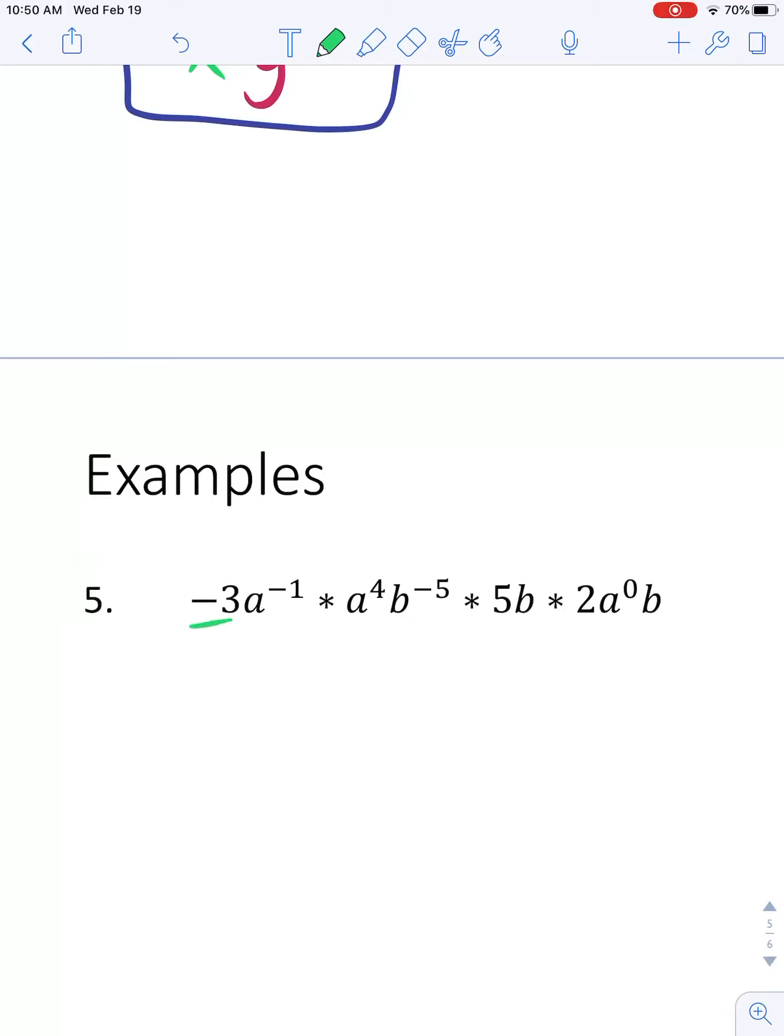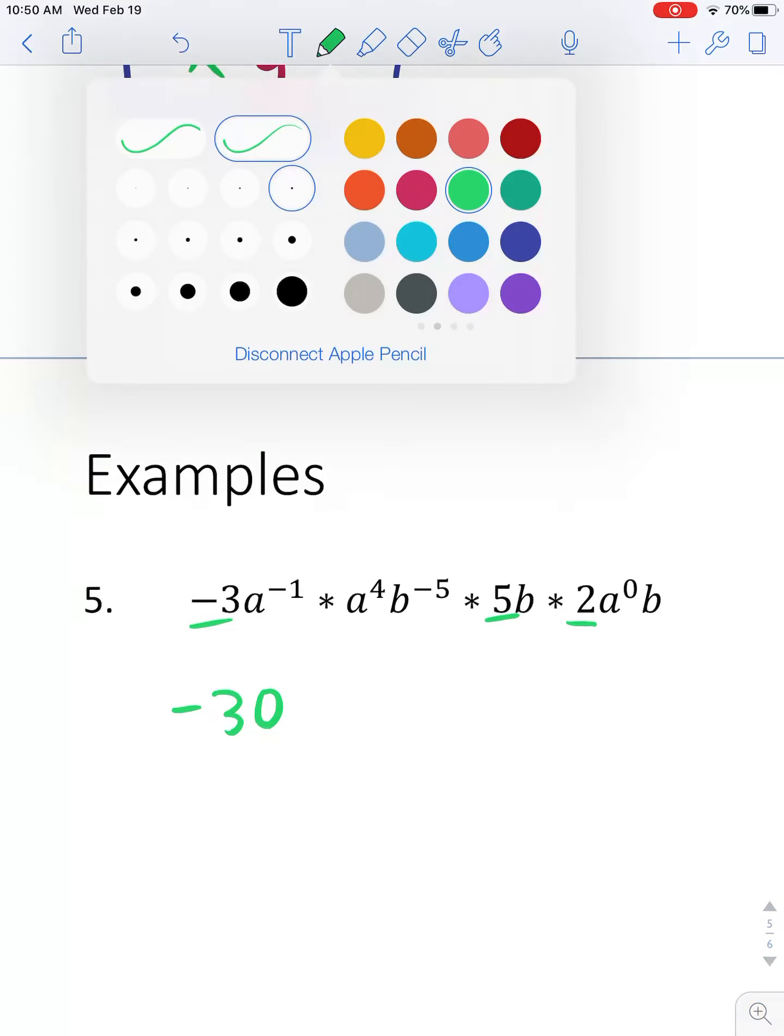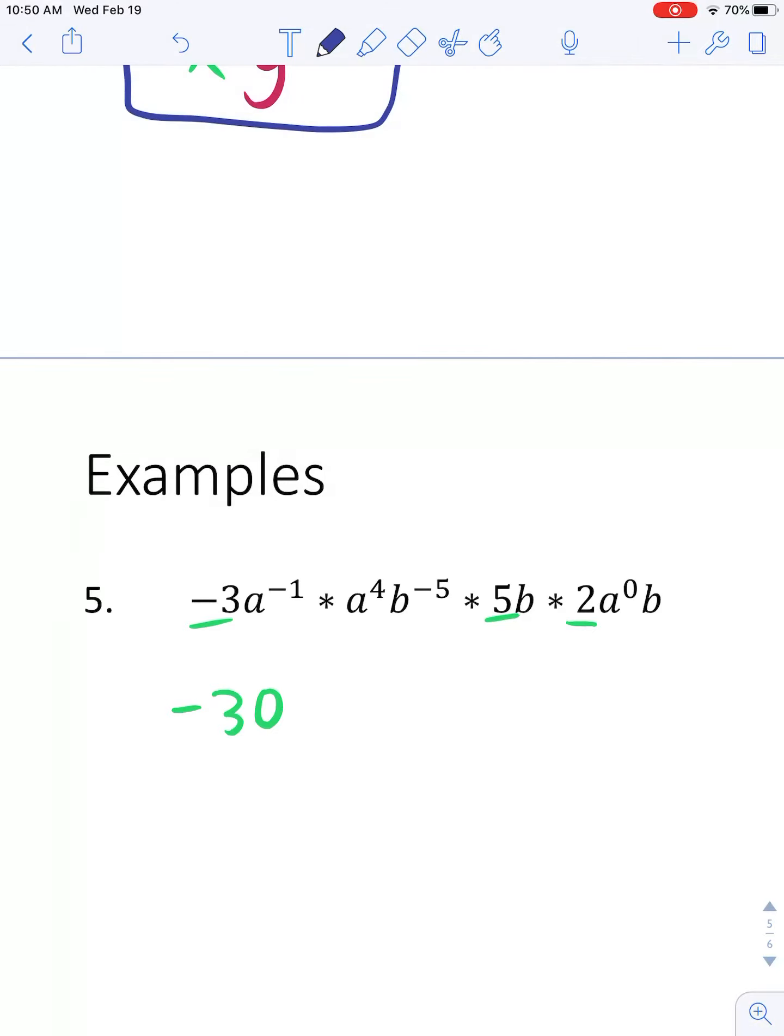So I'm going to start by putting this negative 3, this 5, and this 2 together, which if I take negative 3 times 5 times 2, it becomes negative 30. Then I'm going to start worrying about my a's. I think I'm going to write it once. So a to the negative 1st times a to the 4th times a to the 0. Well, remember, a to the 0 is really just 1. So I can get rid of that. I don't need to worry about that.